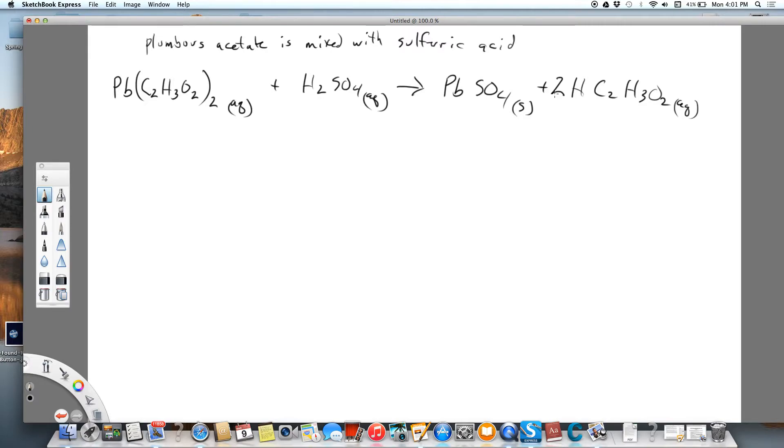Now in order to write the total ionic equation, I know this is aqueous, and lead 2, plumbus lead 2 is plus 2. Then I have 2 acetates, and that is soluble. I know that all acetates are soluble, and then I have a strong acid, so I separate that into ions.